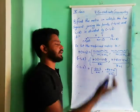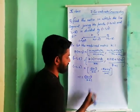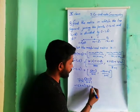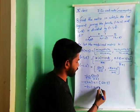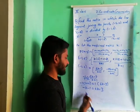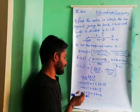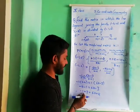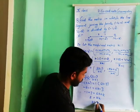Equating X coordinates: -1 = (6K - 3)/(K + 1). By cross multiplication, -1·(K + 1) = 6K - 3, so -K - 1 = 6K - 3. Moving -K to the right side: 6K + K = 7K. Moving -3 to the left side: -1 + 3 = 2. So 2 = 7K, giving K = 2/7.